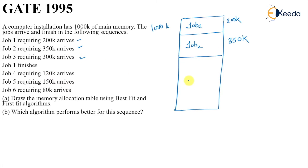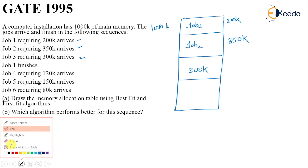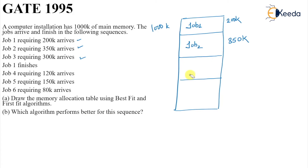Job three comes with 300k and is allocated from 650k to 950k, leaving us with only 150k remaining. So we have 150k free at the end.